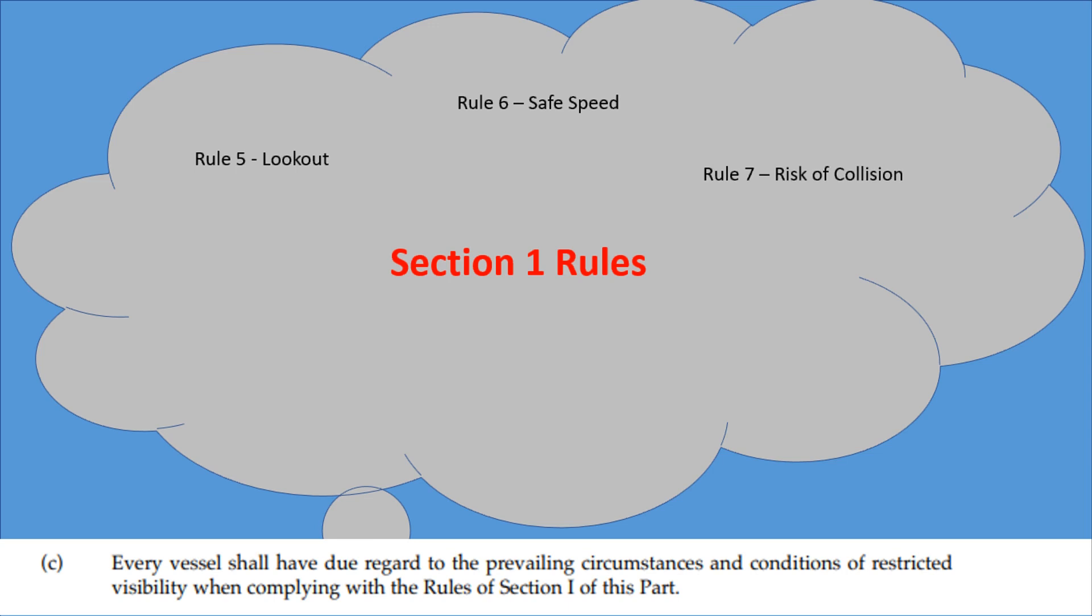Rule 7, Risk of Collision. We have to use all available means appropriate to the prevailing circumstances to ascertain whether or not there is risk of collision. Rule 8, Action to avoid a collision in restricted visibility still needs to be early, bold, clear maneuvering. Rule 9, Narrow Channels. A narrow channel is still a narrow channel, so we still navigate on the starboard side. We still do not anchor in a narrow channel.